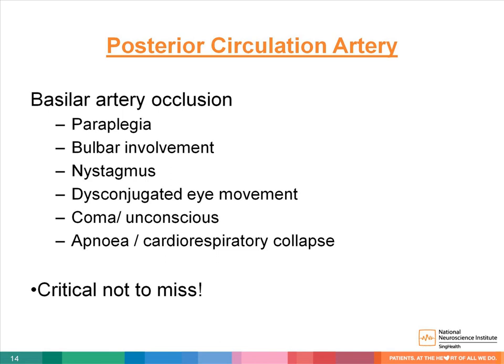As listed, presentations can include paraplegia, bulbar involvement, and nystagmus. Conjugate eye movement deficits can present as classical internuclear ophthalmoplegia, one-and-a-half syndrome, and isolated cranial nerve third, fourth, and sixth palsies. Lastly, coma or unconsciousness, or even apnea and cardiorespiratory collapse, due to extensive reticular formation impairment might occur. It is critical not to miss this and to identify it early, as prompt treatment will improve morbidity and mortality.